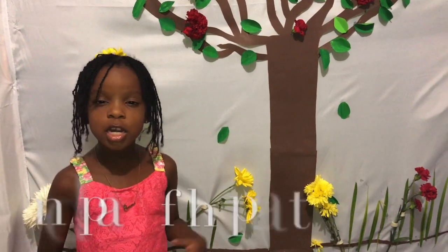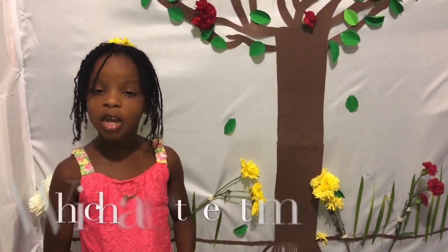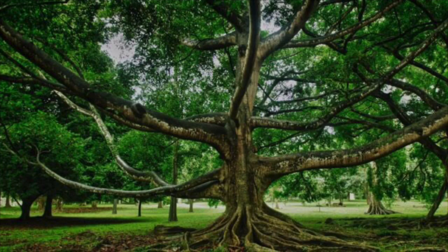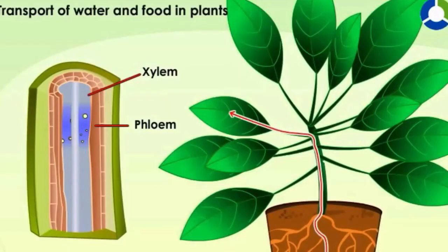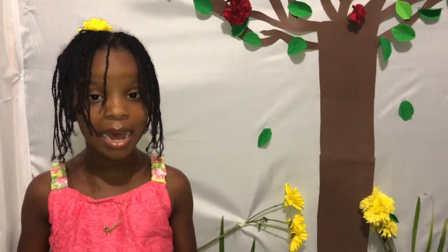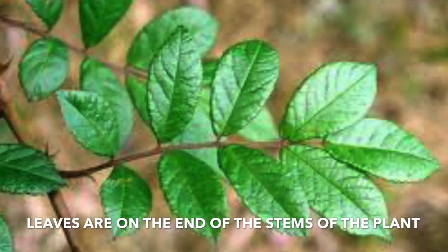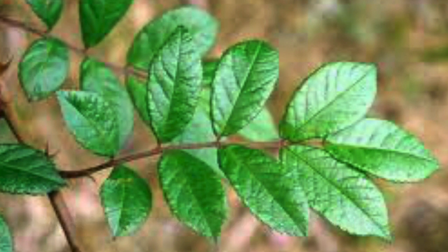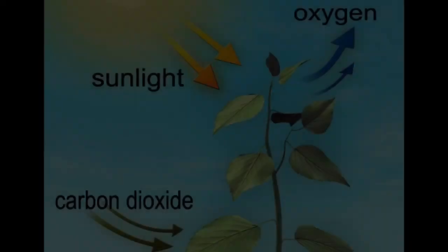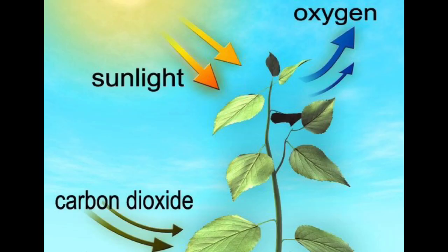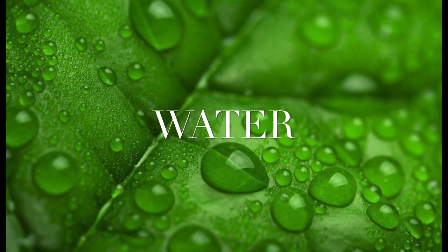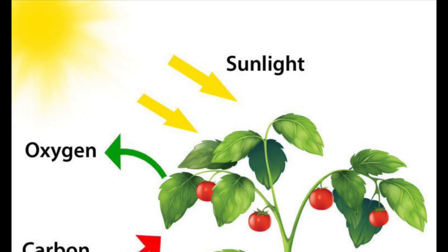Let us now look at the second part of the plant, which are the stems. The stems hold the plant up above ground. The stems carry water and food throughout the plant. The next part of the plant are the leaves. The leaves are on the end of the stems of the plant. The leaves are where plants make most of their food. The leaves take in air — they use air, water, and sunlight to make food.